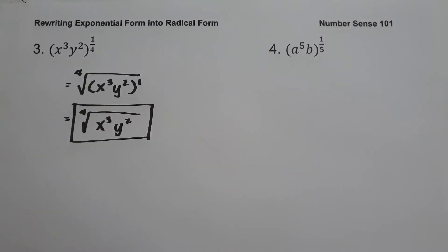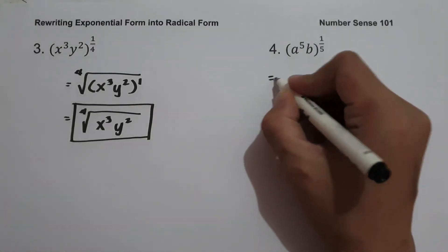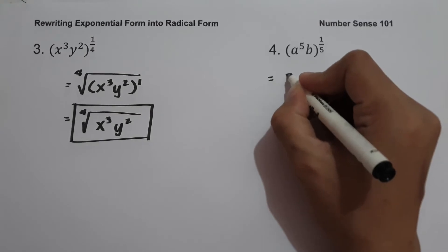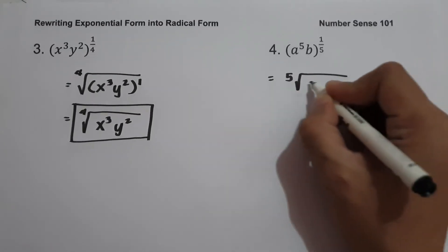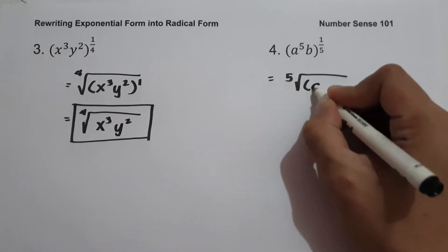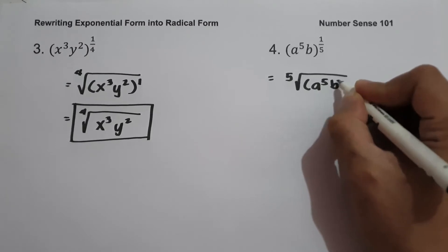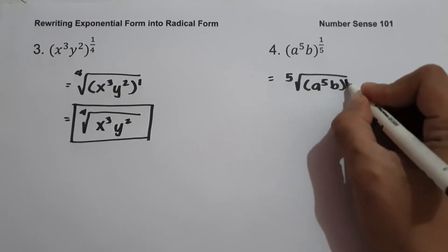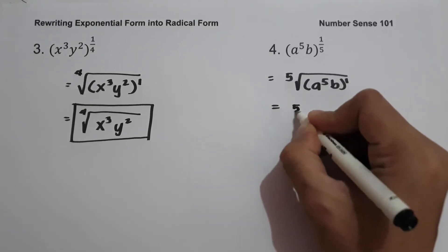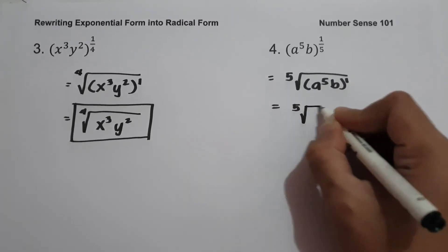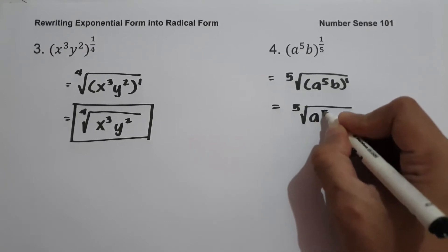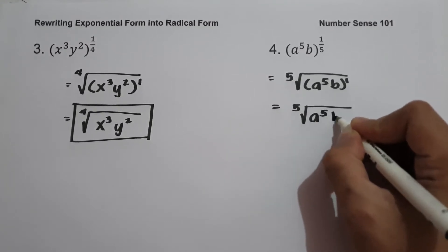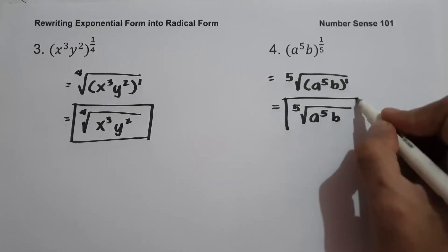On example number four: quantity a raised to 5, b raised to 1 fifth. To write this in radical form, we have the 5th root of quantity a raised to 5, b raised to 1. Or we can write it as the 5th root of a raised to 5, b. And this will be our answer.